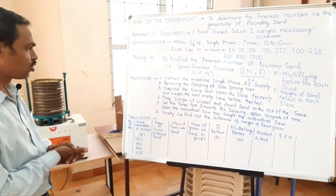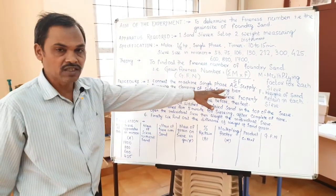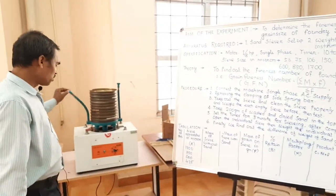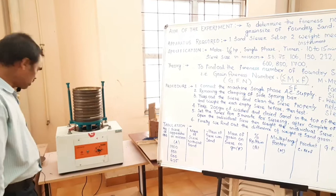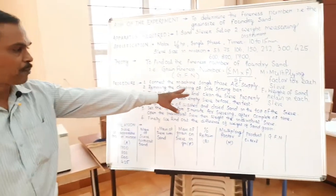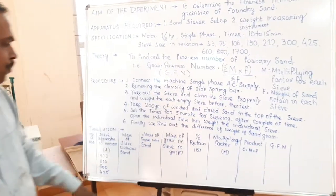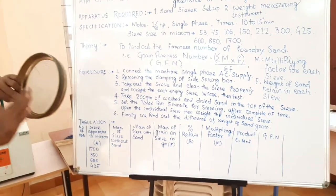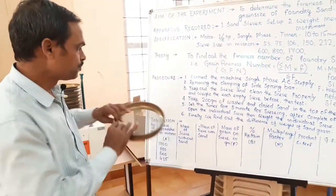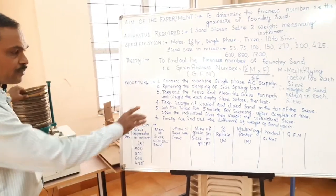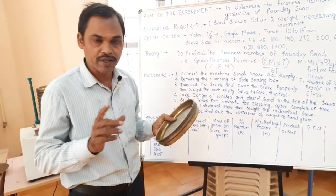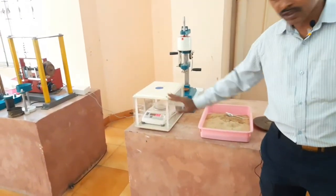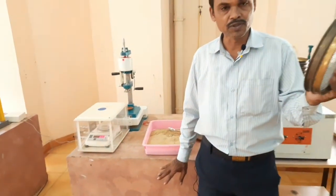What is the procedure? First, we connect the machine with a single phase AC supply, then remove the clamping — these are the clamps here. Remove the clamping side spring bar, take out the sieve, clean and dry it properly. We clean each sieve and then wet each empty sieve before starting the experiment, using this wetting machine, individually.